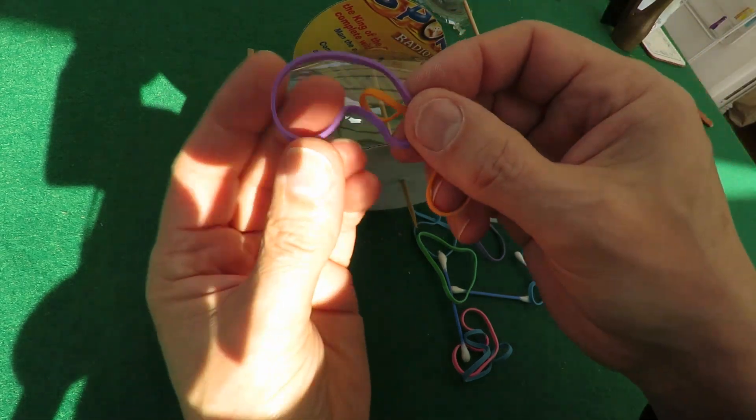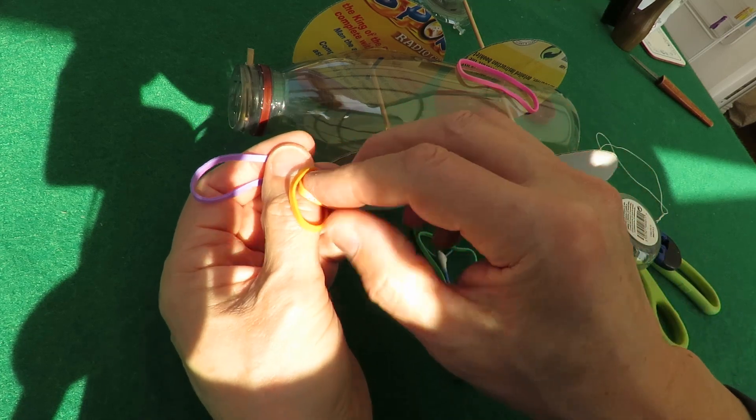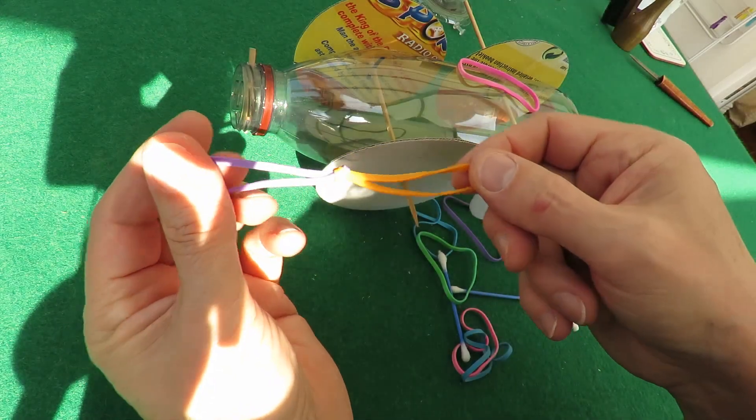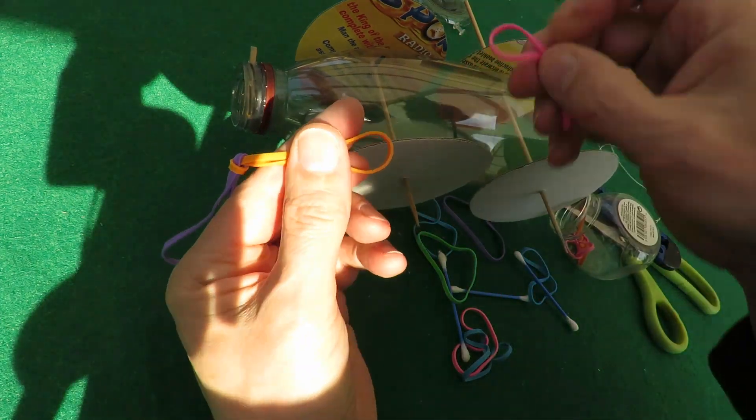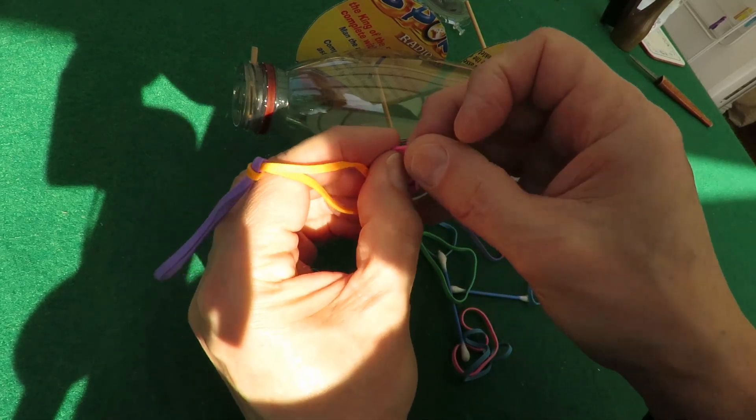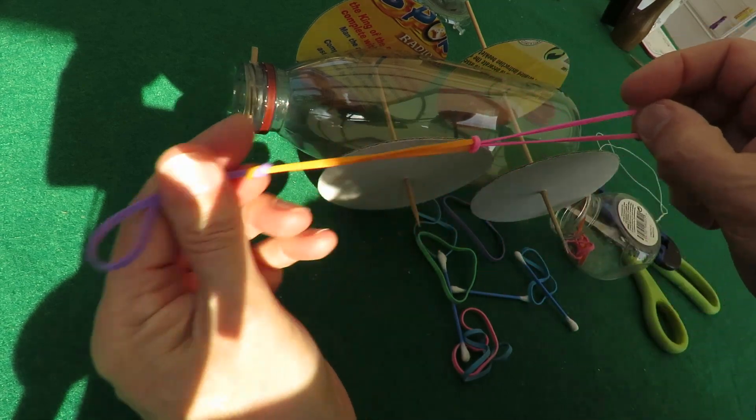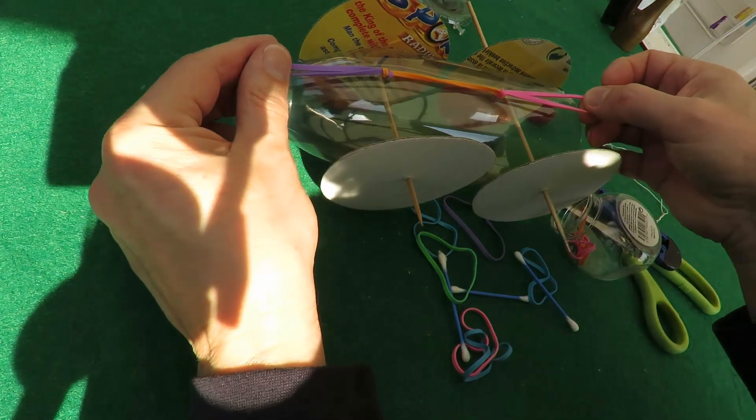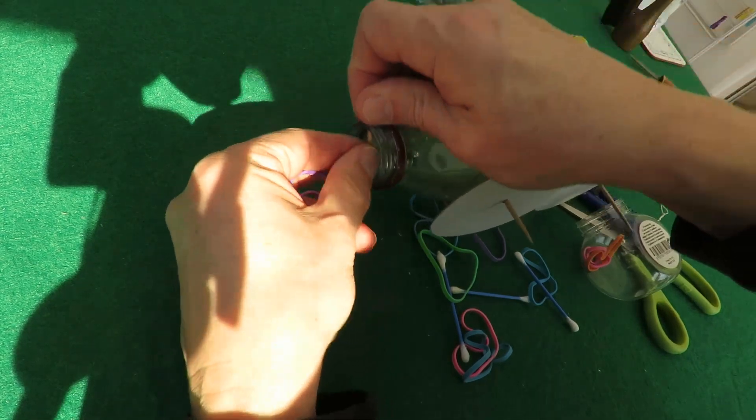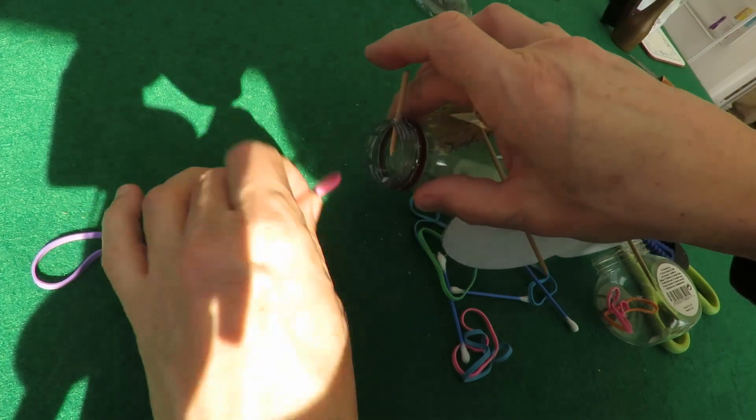So to join rubber bands together, push one through and then push that through the loop. Push that through and push that through the loop. And there you are, we've got a longer rubber band now and we want this to go in there.